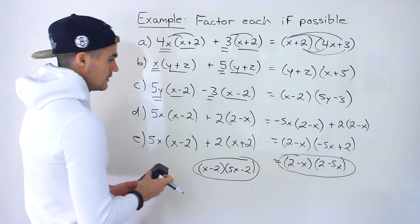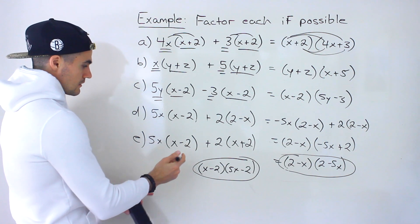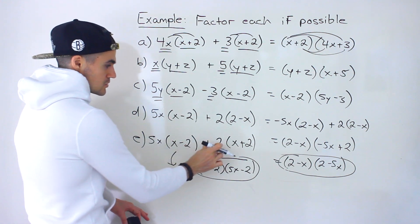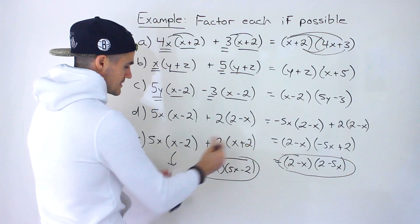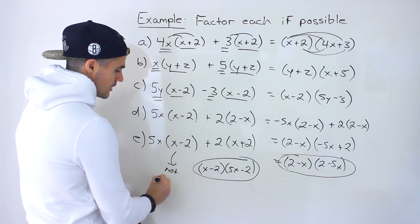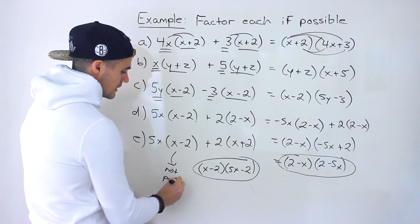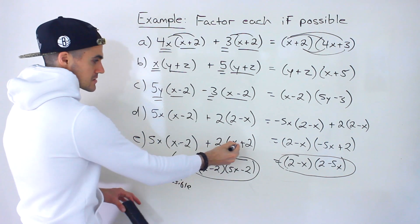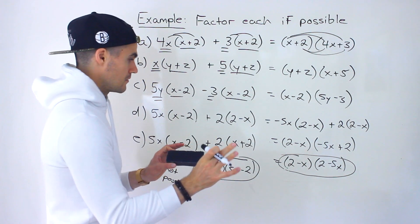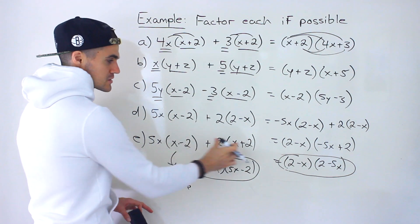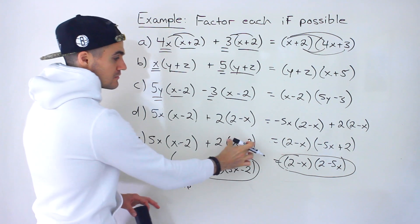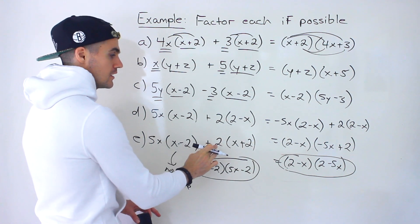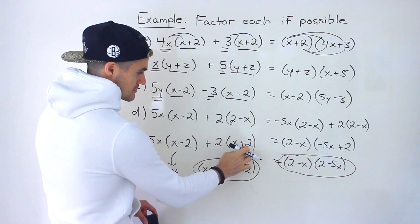And then part E, it's actually really easy. I'm not going to even write anything. We got 5x times x minus 2 plus 2 times x plus 2. Basically, this one is not possible. Okay, because the x minus 2 and the x plus 2 are different binomials. And there's no way that I could take x minus 2 and convert it to x plus 2.